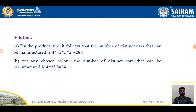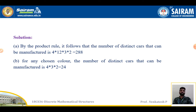It will be 4 models times 12 colors times 3 engine types times 2 transmission types, which equals 288. For a particular chosen color, the number of distinct cars that can be manufactured will be 4 models times 3 engine types times 2 transmission types, which equals 24.